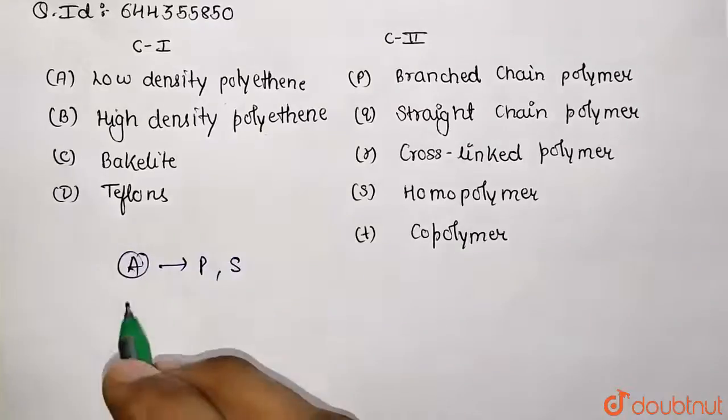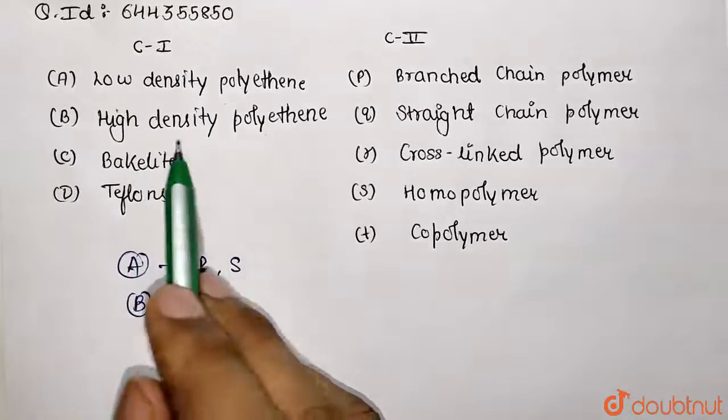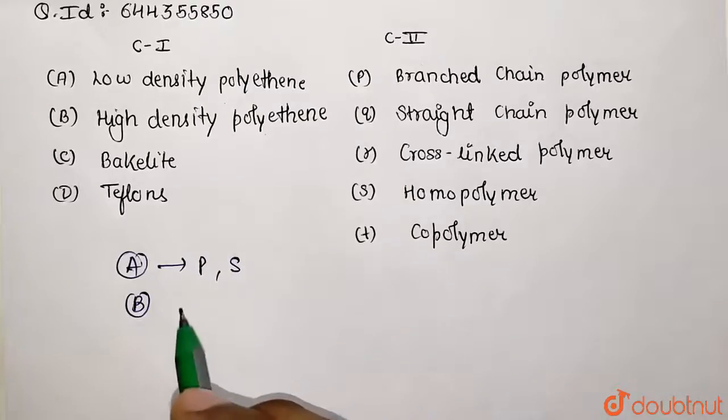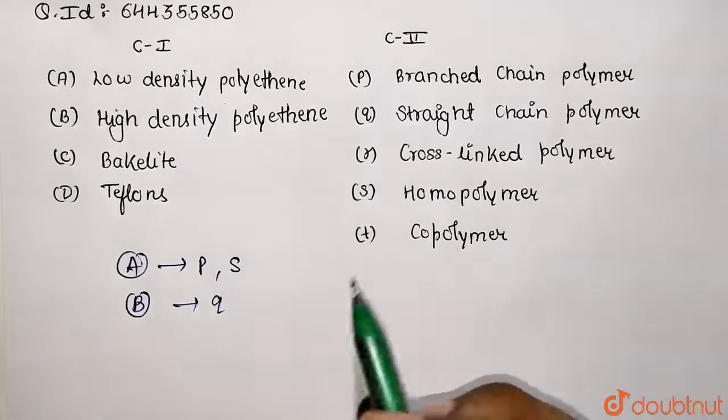Let's look at option B, high density polythene. It's going to match with straight chain polymer (option Q) because they consist of linear chain molecules and have very high density due to close packing. It is also manufactured from the same unit of ethene, so it's a homopolymer.